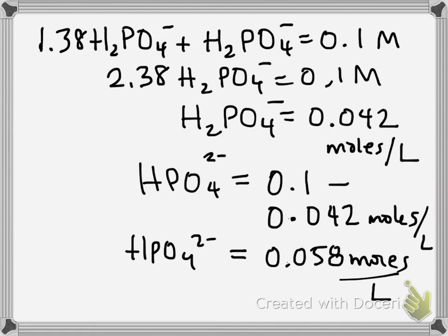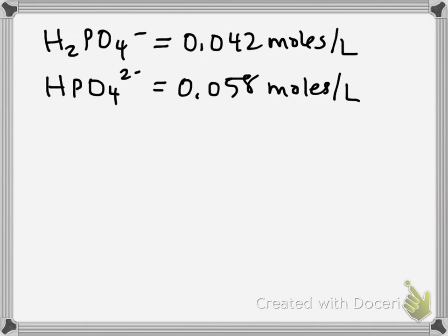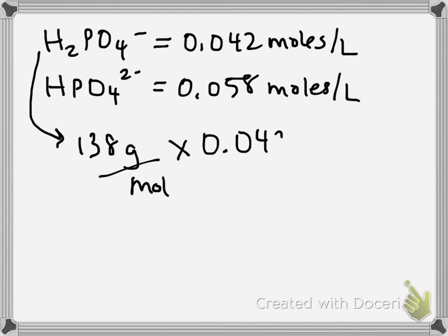But you are not done, because the question is asking, how many grams of each would you put in the liter? So now you have to go back and look at the molecular weight. So for H2PO4, the molecular weight was 138 grams per mole. So, if you're only using 0.042 moles, how many grams is that? It's 5.8 grams. So that's how much you put in one liter.